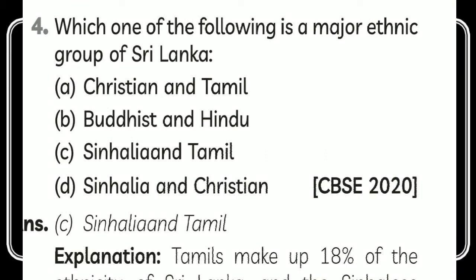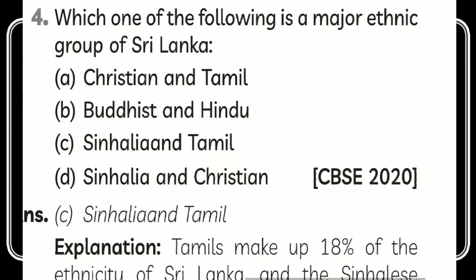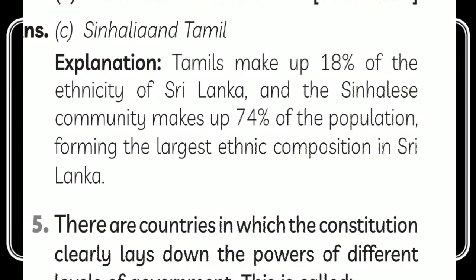The next question is: which is a major ethnic group of Sri Lanka? The answer is Sinhala and Tamil. Tamils make up 18 percent of the ethnicity of Sri Lanka and the Sinhala community makes up 74 percent — the largest ethnic composition. Within the 18 percent Tamil population, there are two communities: Sri Lankan Tamils at 13 percent and Indian Tamils at 5 percent.